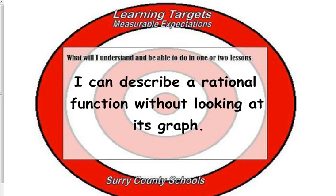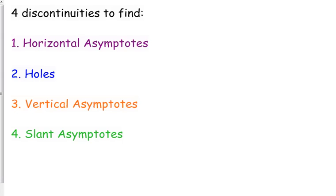We're going to talk about several characteristics of rational functions without actually looking at their graphs. The first thing is we have four types of discontinuities to describe.